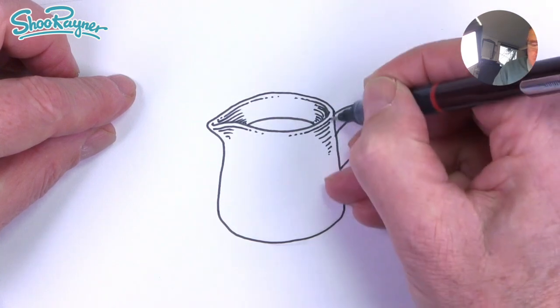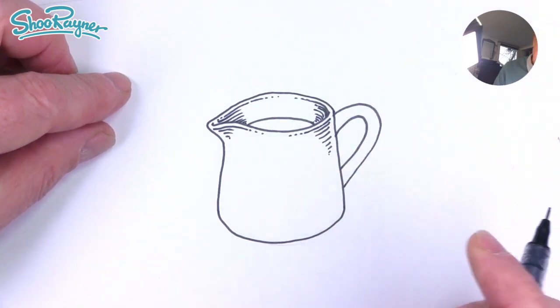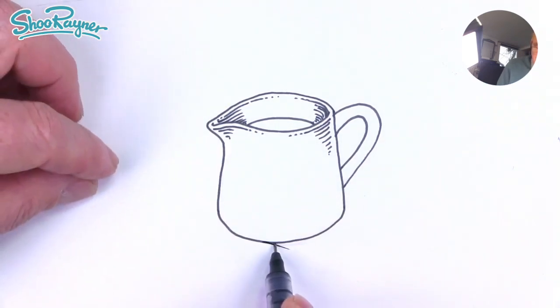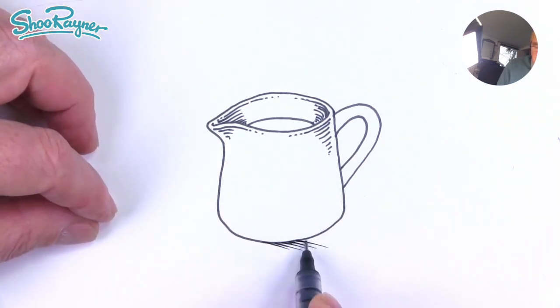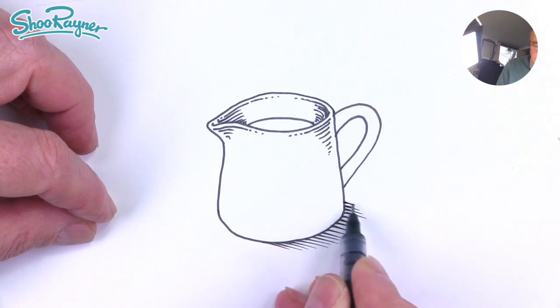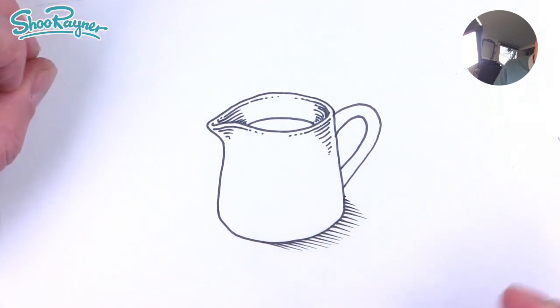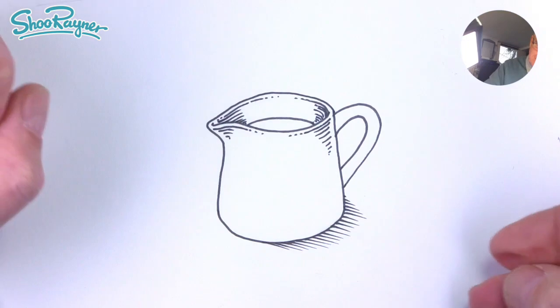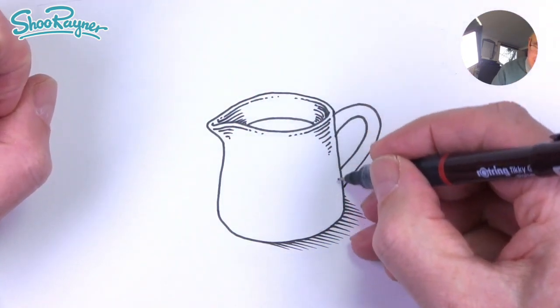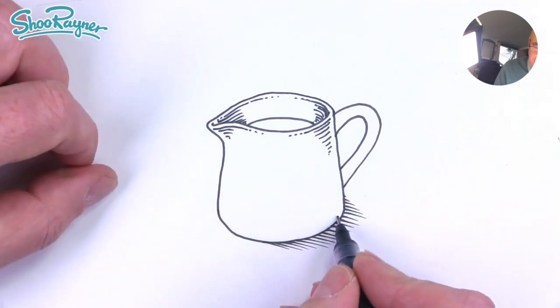Don't let it go right to the edge of the line. Leave a little bit of space there because the light is shining down here, which means that we're going to get shadow coming on the ground here. So the whole jug is kind of creating that big shadow there. But there's also ambient light which is kind of reflecting up off the table and it's illuminating these edges. So don't go right to the edge.